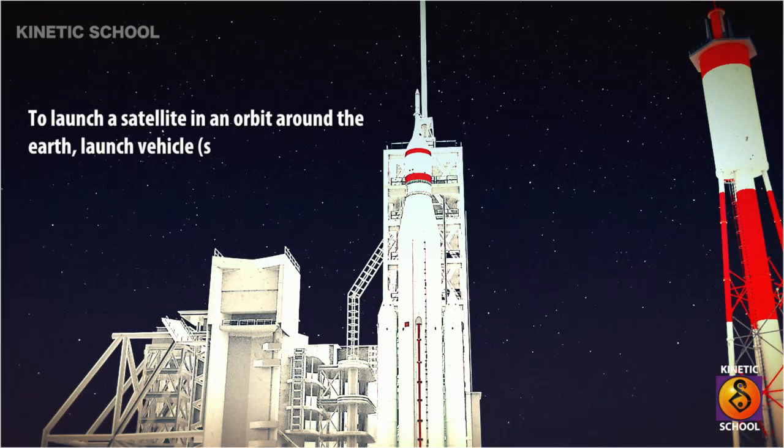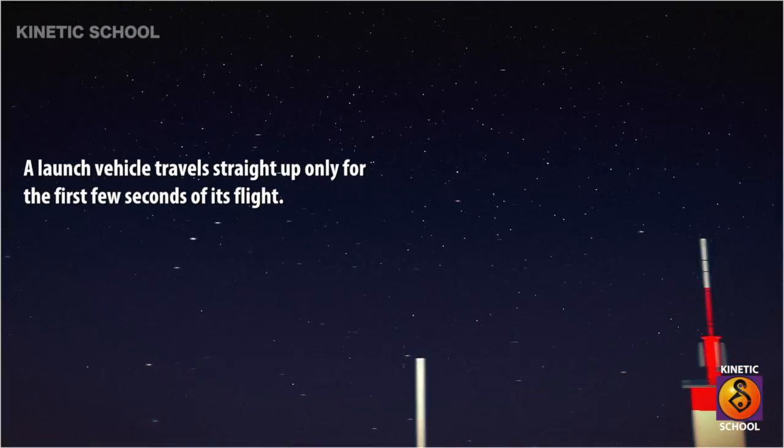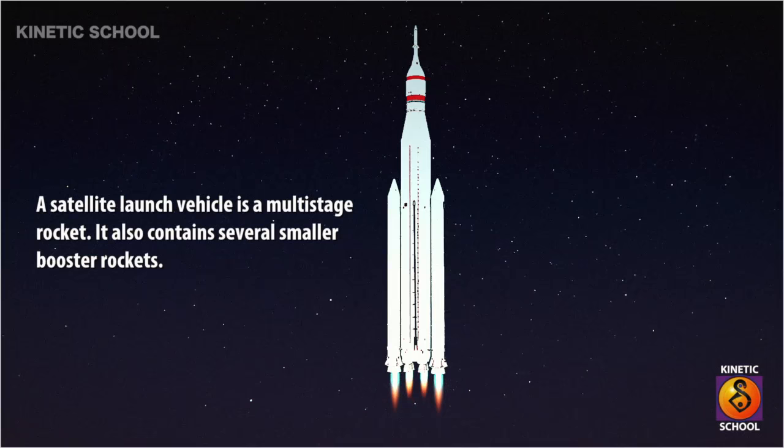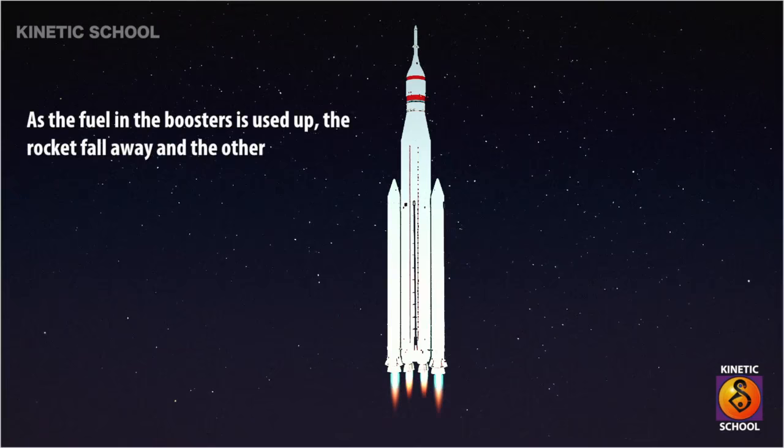To launch a satellite in an orbit around the Earth, a launch vehicle such as a rocket or a space shuttle is used. A launch vehicle travels straight up only for the first few seconds of its flight. A satellite launch vehicle is a multi-stage rocket that also contains several smaller booster rockets. The boosters give the rocket its initial thrust during launch and carry the vehicle through the early part of the flight. As the fuel in the boosters is used up, the rocket stages fall away and the other boosters take over.